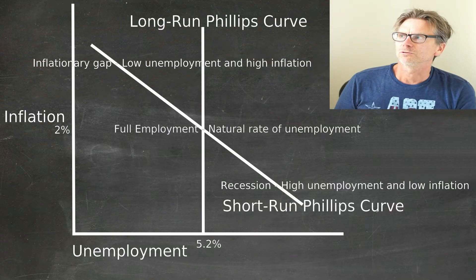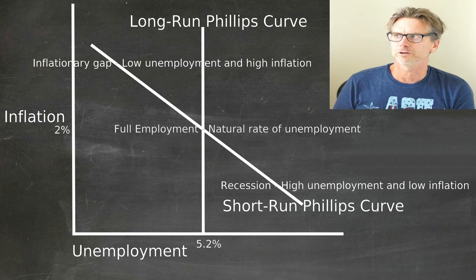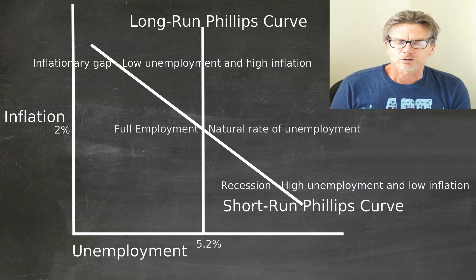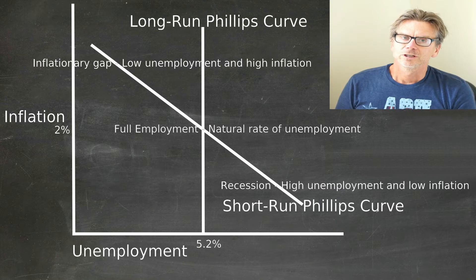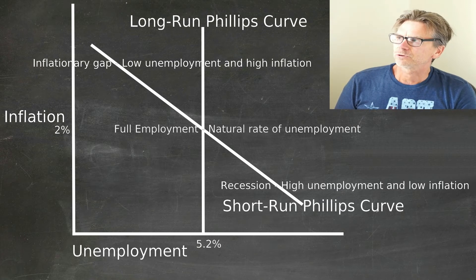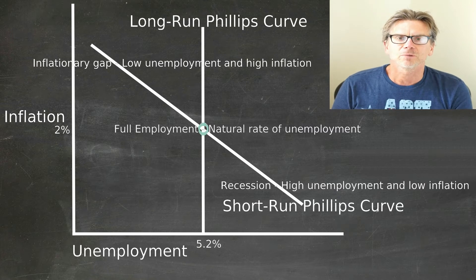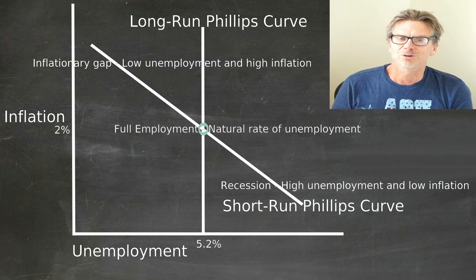If you take a look at the Phillips curve, you have two Phillips curves: a long-run Phillips curve and a short-run Phillips curve. The long-run Phillips curve is vertical, and the short-run Phillips curve is downward sloping. The long-run Phillips curve always gravitates towards the natural rate of unemployment. There's debate about what it should be — the CBO says it's 5.2%, which is where the economy sits including structural and frictional unemployment but minus cyclical unemployment.